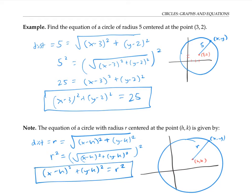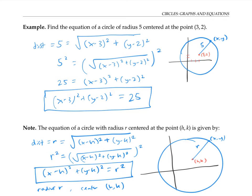That's the general formula for a circle with radius r and center h, k. Notice that the coordinates h and k are subtracted, the two squares are added because they are in the distance formula, and the radius is squared on the other side.